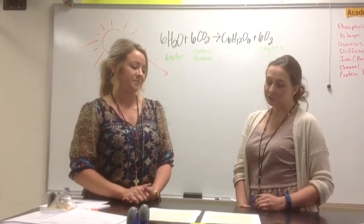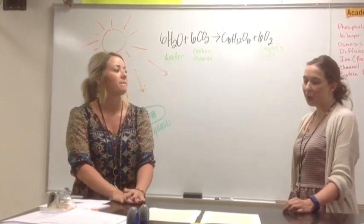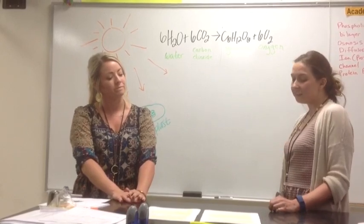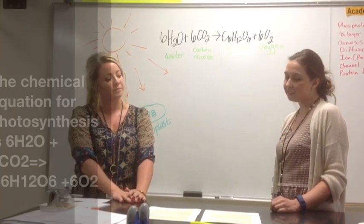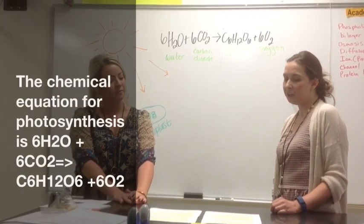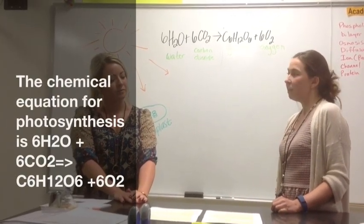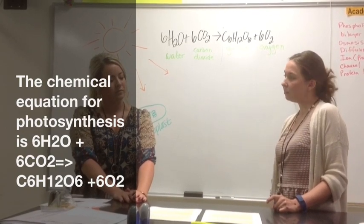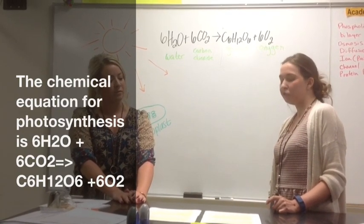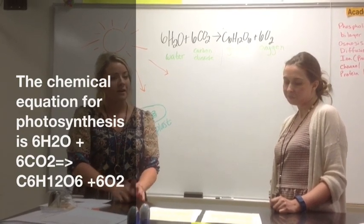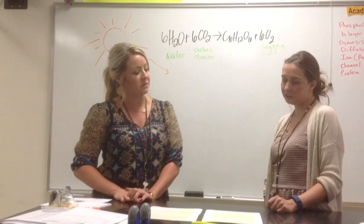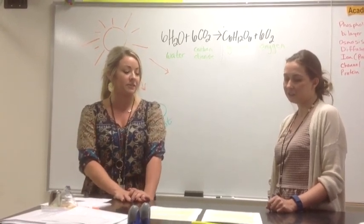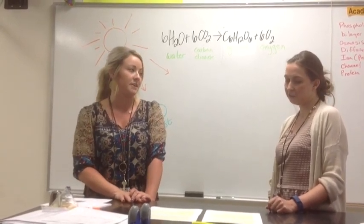The actual chemical equation used to describe photosynthesis is: 6H₂O + 6CO₂ → C₆H₁₂O₆ + 6O₂. Basically, that's water plus carbon dioxide yields glucose and oxygen.